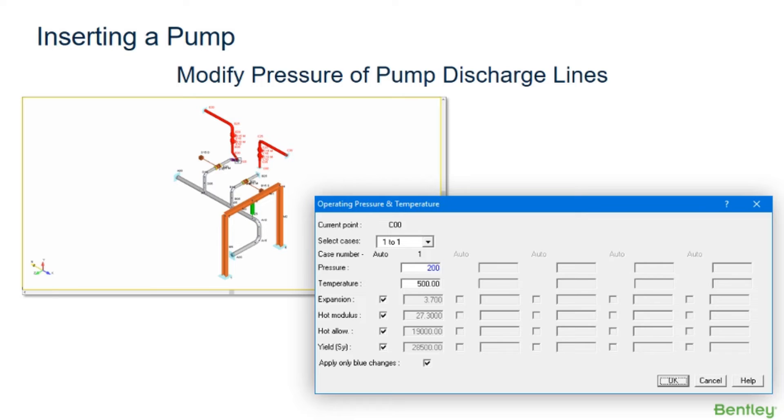This dialog is automatically displayed during the definition of a new system, but must be selected manually if a new segment is inserted into the model and operates under different loads than the original segment.